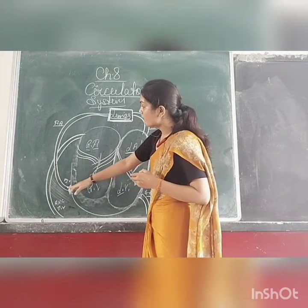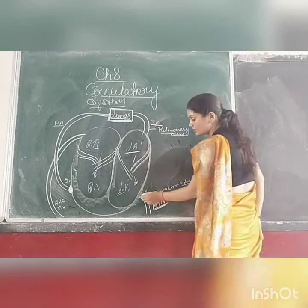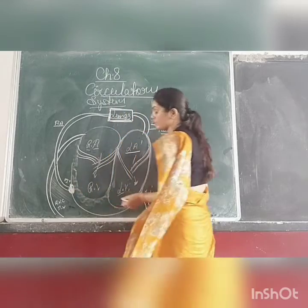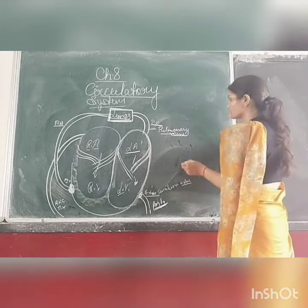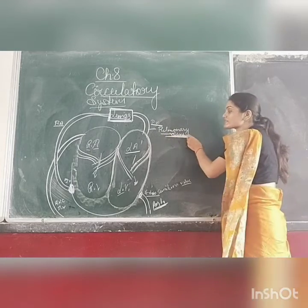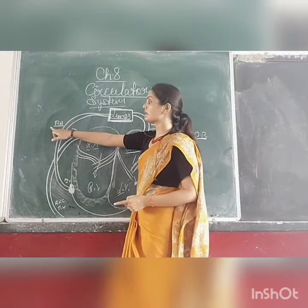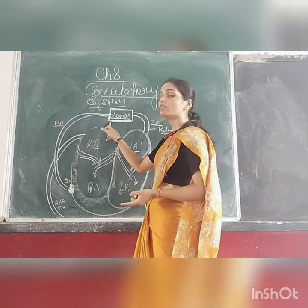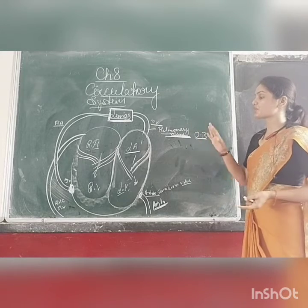From the right ventricle, with the help of the pulmonary artery, the blood goes inside the lungs. Now, there are two important exceptions to remember: veins normally carry deoxygenated blood, but the pulmonary vein carries oxygenated blood. Similarly, arteries normally carry oxygenated blood, but the pulmonary artery contains deoxygenated blood. Both are related to the lungs.